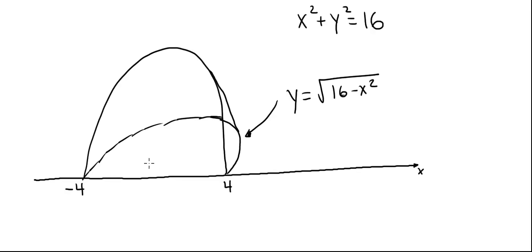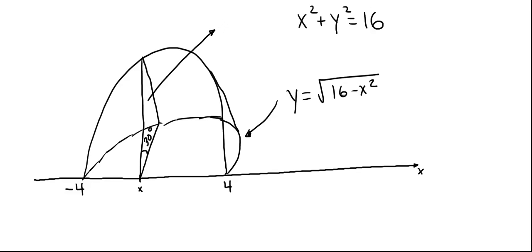We're going to use a technique called volumes by cross section. First we'll select any x between minus 4 and 4, and take a cross section that is perpendicular to the x-axis. That is a triangular cross section. Since the plane cuts the cylinder at an angle of 30 degrees, this angle is 30 degrees. All we have to do is find the area of this triangle as a function of x and integrate from minus 4 to 4 to get the volume of this wedge.